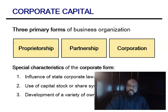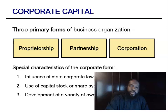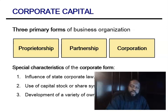The slide you're reviewing right now is mainly referencing corporate capital, which reviews the three primary forms of business organization: sole proprietorships, partnerships, and corporations.